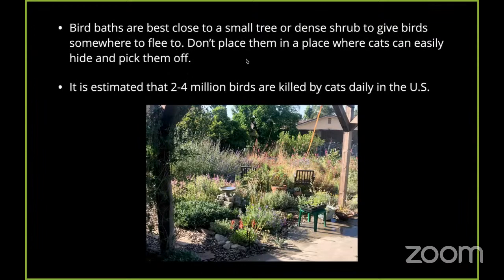Try not to put it in a place where cats can easily hide and pick birds off. It's estimated that two to four million birds are killed by cats daily in the US. So if you're really trying to have a yard that supports wildlife habitat, having your cat be an indoor cat — or if you do want your cat to go outside, considering having the cat on a harness and a leash to walk around with you — is the best practice. It's a little weird to have your cat get used to being out on a leash at the beginning, but we had one cat that really liked to go outside on his leash and it worked out well for everyone involved and we never lost a bird.